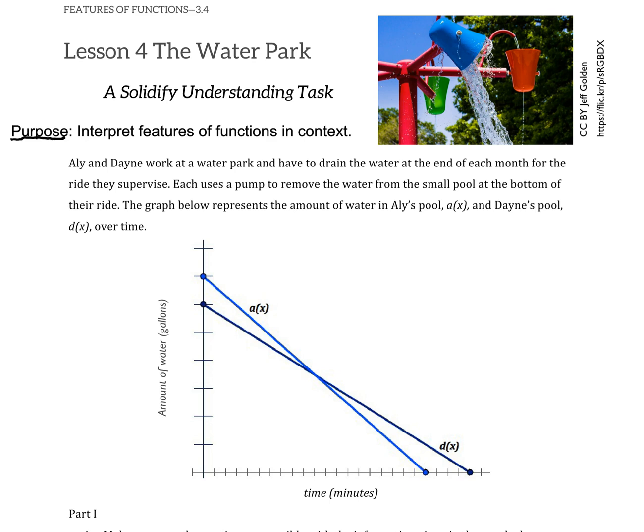Allie and Dane work together at a water park, and they have to drain water at the end of each month for the ride they supervise. Each uses a pump to remove the water from the small pool at the bottom of their ride. The graph below represents the amount of water in Allie's pool and the amount of water in Dane's pool over time. So, we have Allie is A of X, and Dane is D of X.